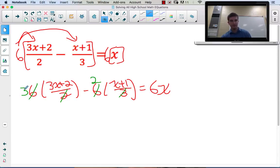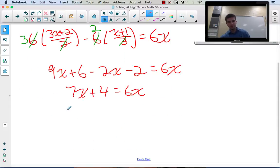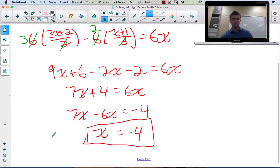So I have 3(3x+2), that's 9x + 6, and -2(x+1), that's -2x - 2 equals 6x. Collect like terms: 9x - 2x is 7x, 6 - 2 is 4. Move the variable terms to the left, 7x - 6x equals the constant term -4, so x = -4. That would be the hardest equation you'd have to solve in your grade 9 math career.